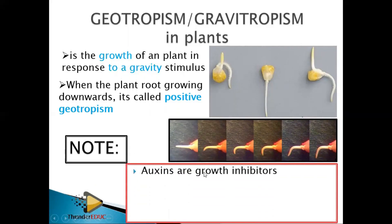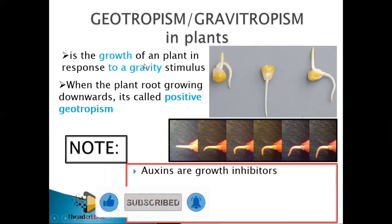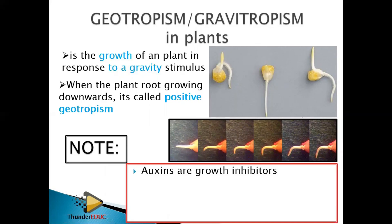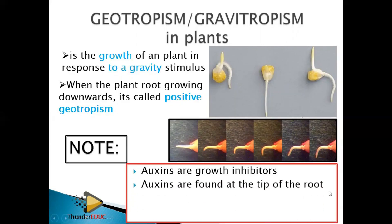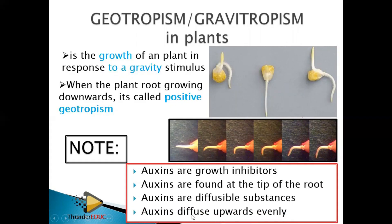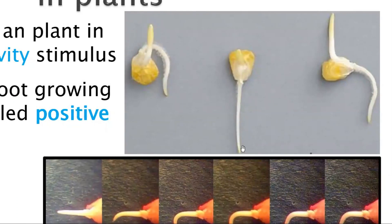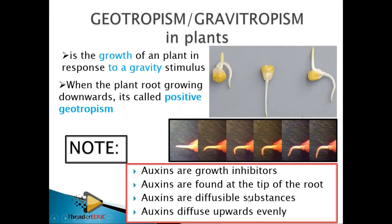Note: in the case of geotropism, auxins are growth inhibitors — they work in the opposite way to how they work in phototropism. In phototropism, auxins promote growth, but in geotropism, auxins in the roots inhibit growth. You need to know that distinction. Auxins are found at the tip of the root, they are diffusable substances, and in the case of the root they diffuse upwards evenly — in equal distribution — unlike in the shoot where they diffuse downwards evenly.